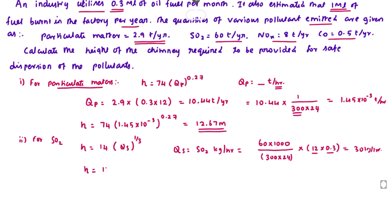Now we can substitute the value: H equal to 14 into Qs which is 30 power 1 by 3. Solving this we get the value of 43.45, let's say that is 45 meters. So to disperse the SO2 we need to design the chimney for 45 meters.